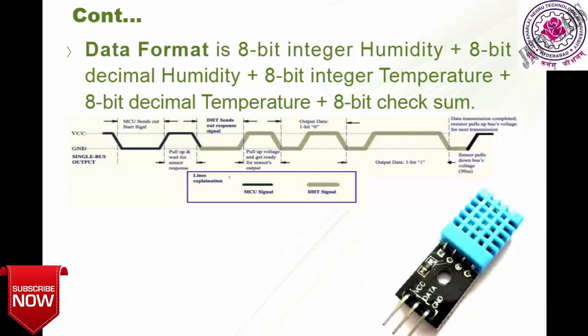To get data from the DHT11, you have three active pins: VCC, data, and ground. The fourth pin is no connection, so it is not connected.